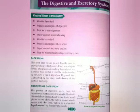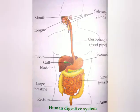Various organs help in this process, such as the mouth, food pipe, liver, stomach, small intestine, large intestine, anus, etc. The digested food is absorbed by the blood and taken to all body parts.